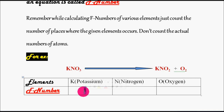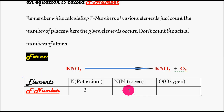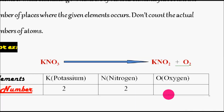In how many places is potassium existing? On the left hand side there is only one potassium nitrate, so there is only one place where potassium exists on the reactant side. On the product side, potassium is also existing one time. So totally, potassium is existing in two places. Note that we are not counting the number of atoms on each side — we are counting in how many places potassium is existing, including both left and right hand sides. Similarly, nitrogen is existing at one place on the left and one place on the right, giving frequency number 2.